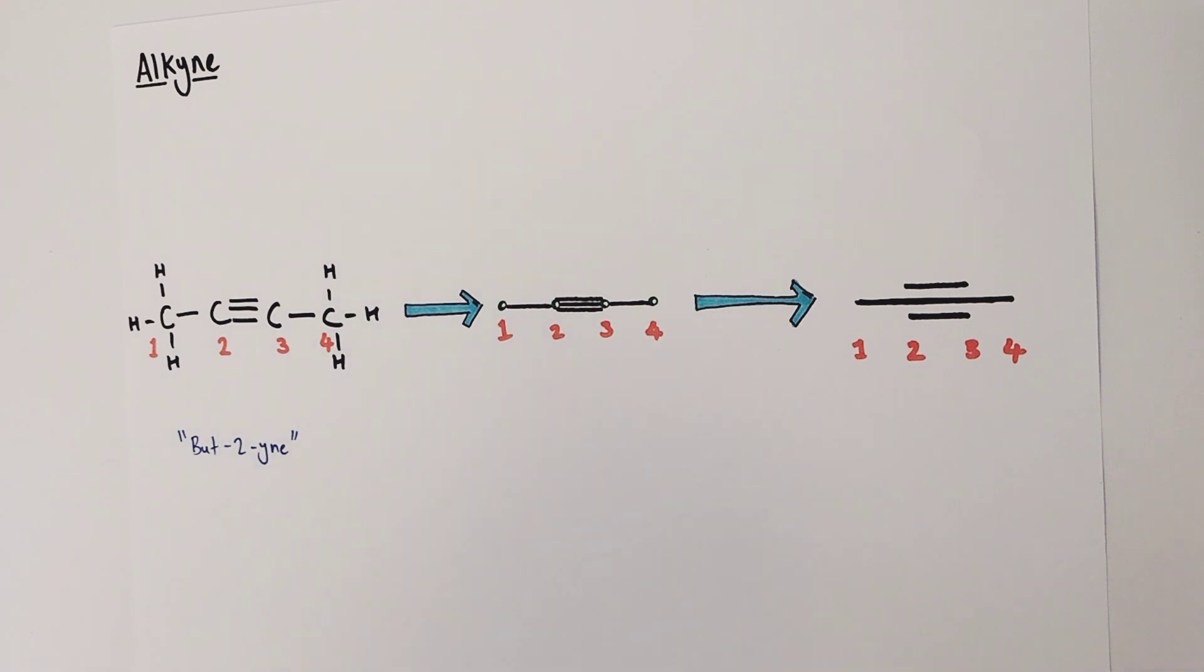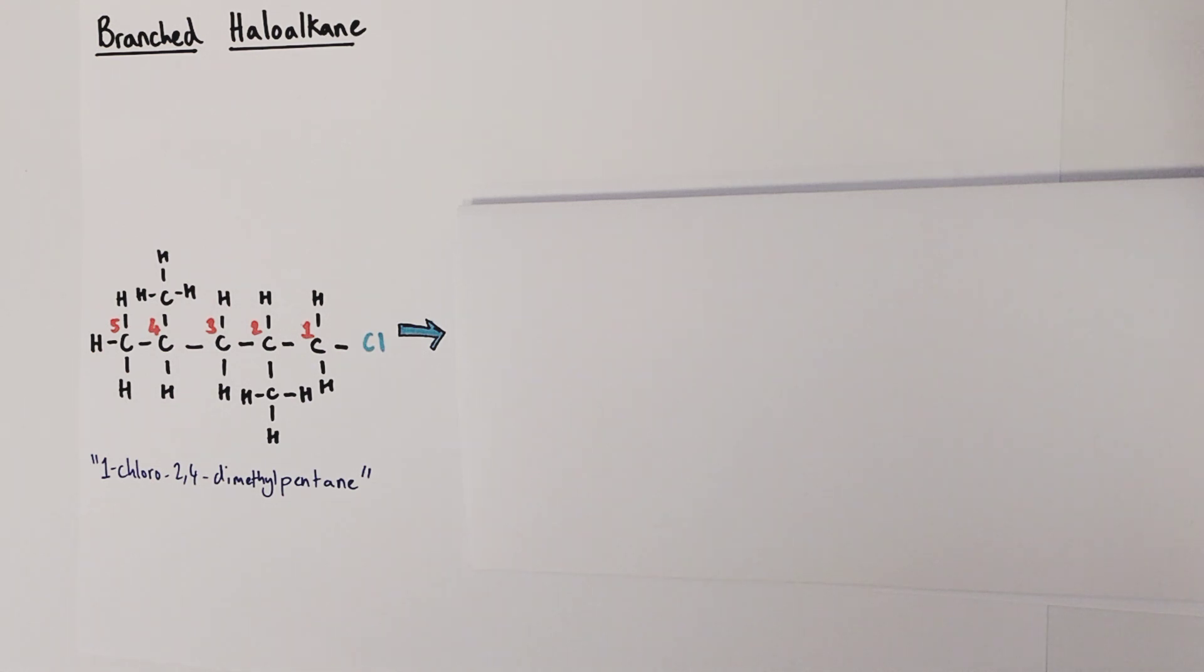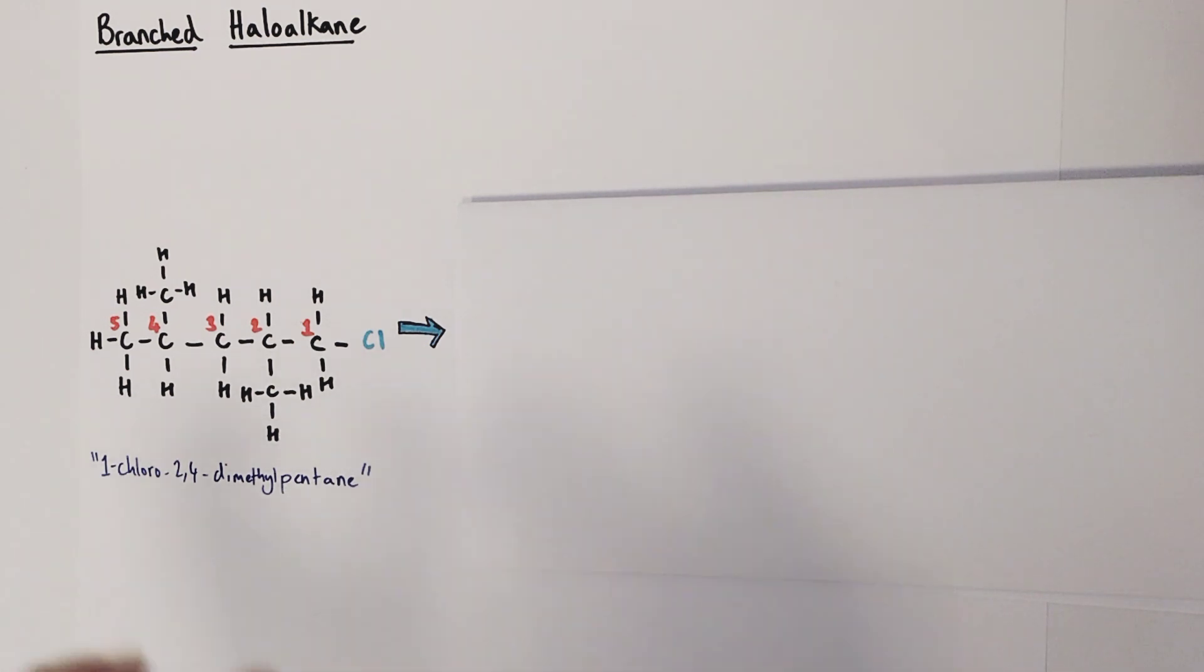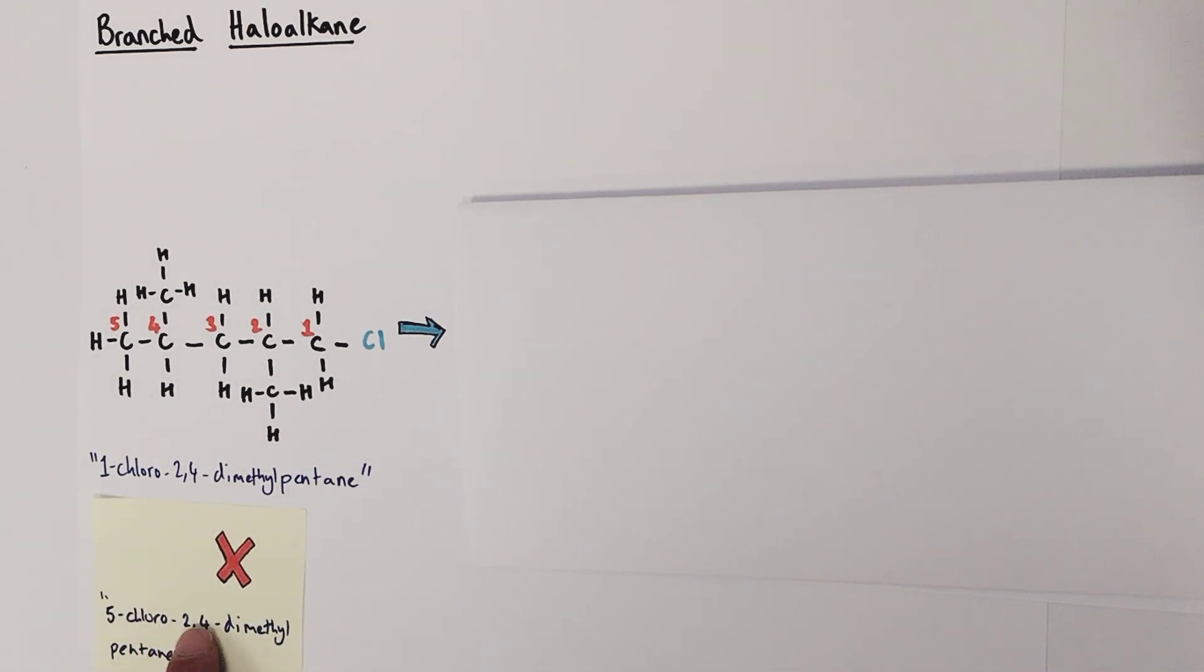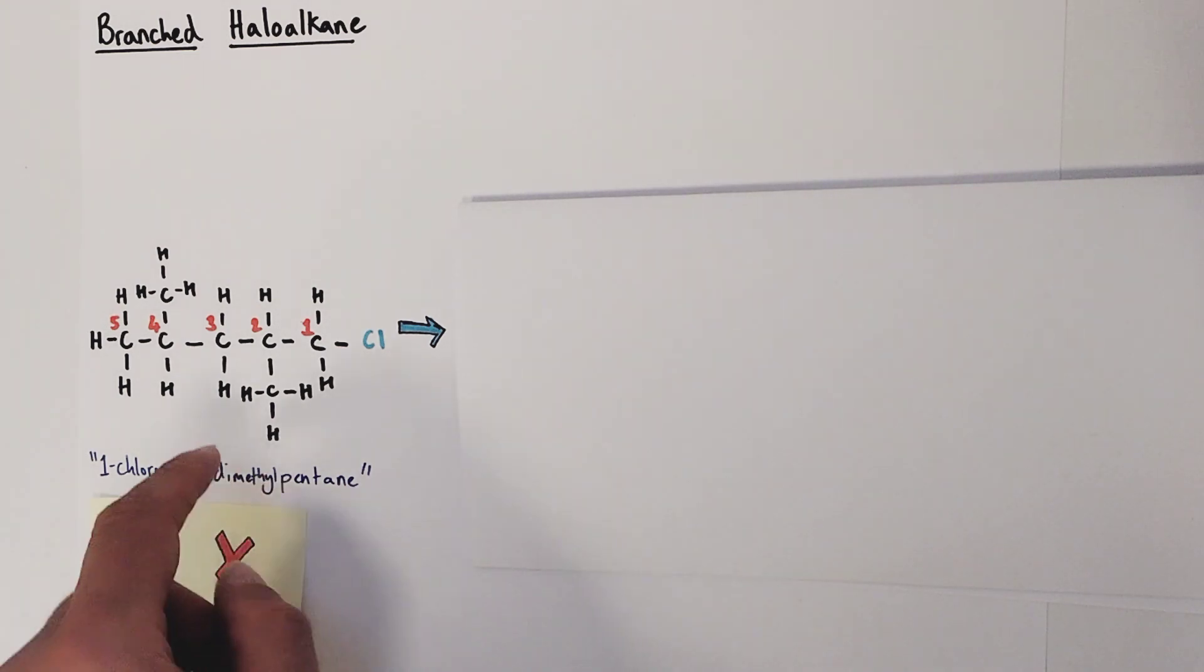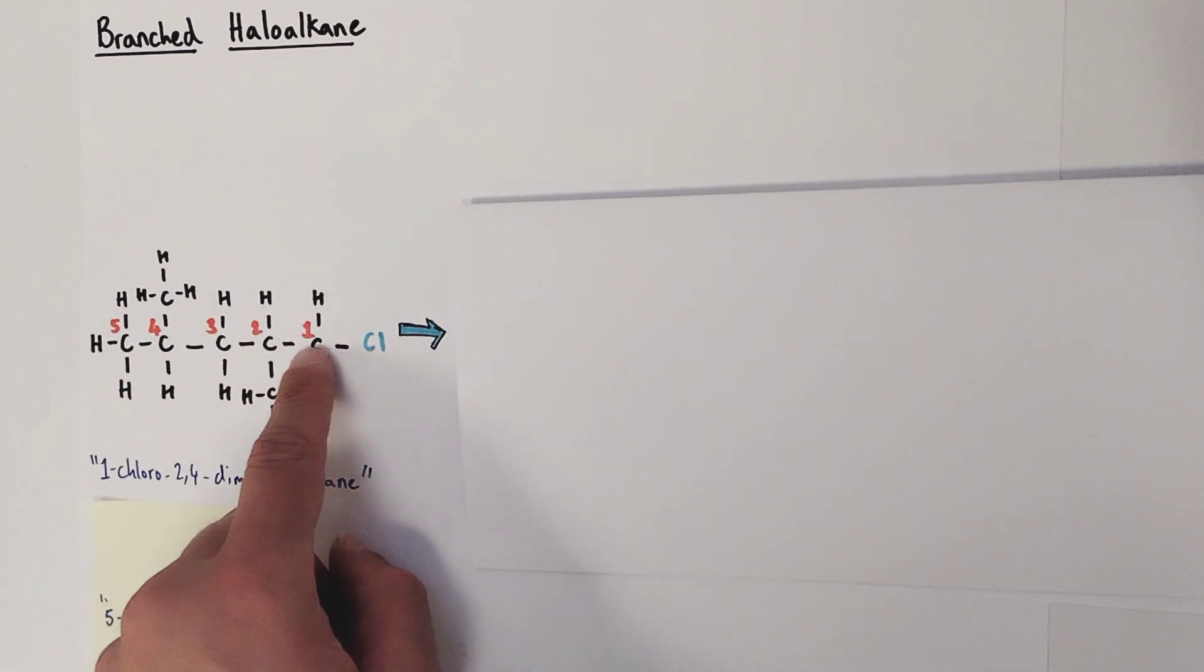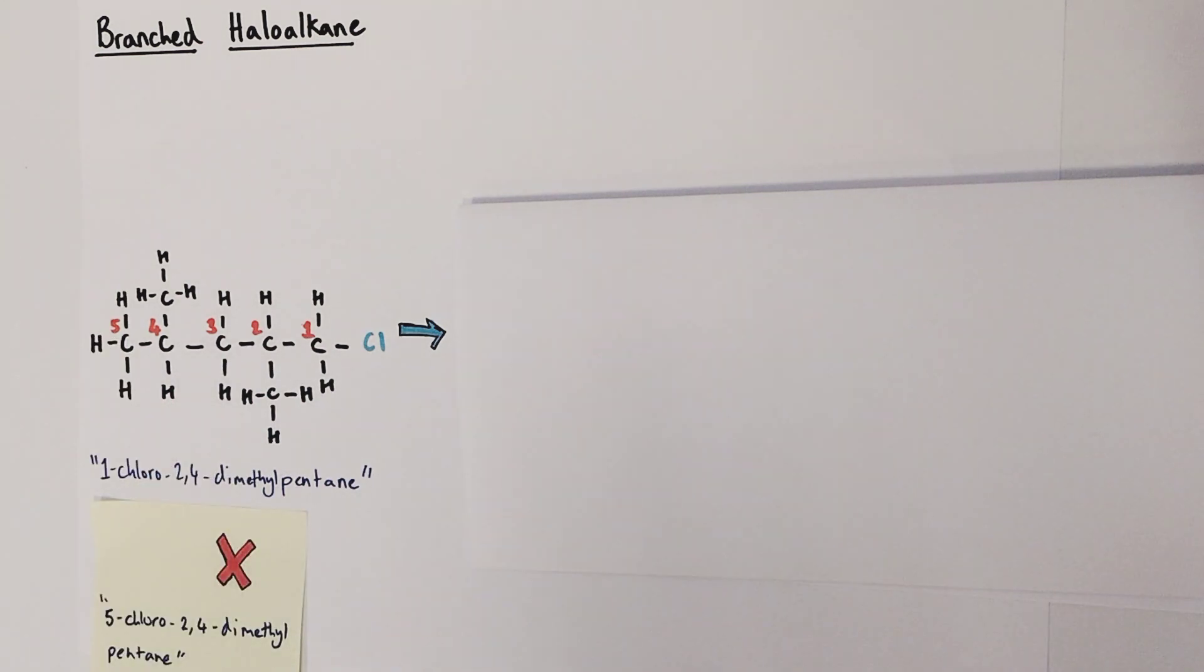I'm going to do one more worked example and I'm going to leave you guys with a problem to solve. Our final practice example is going to be a branched haloalkane. Specifically, the example I've chosen is 1-chloro-2,4-dimethylpentane. I want to talk about the nomenclature of this before we crack on.